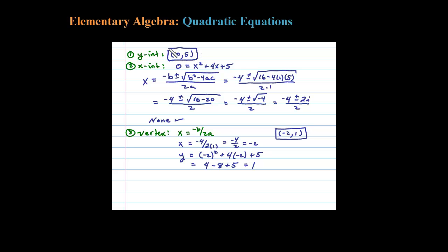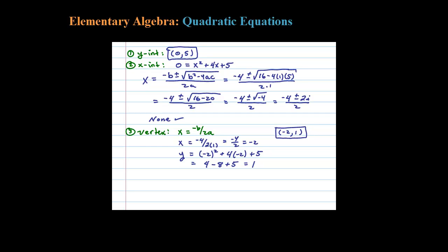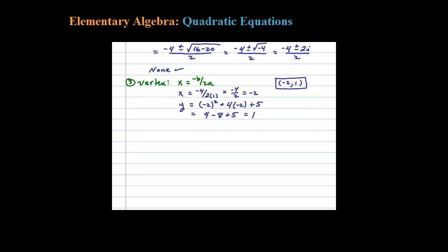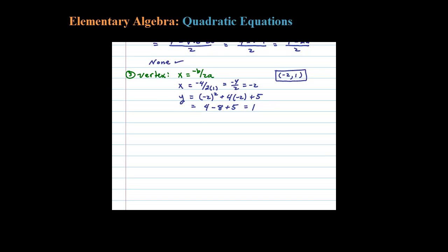So we have our vertex and we have the y-intercept. We know there's no x-intercepts, and we also know the parabola opens up because the leading coefficient is positive. But two points is not enough to determine a parabola, so we're going to have to find a couple more points.